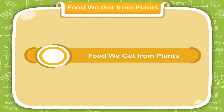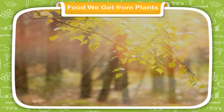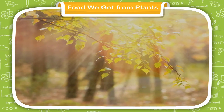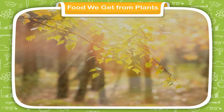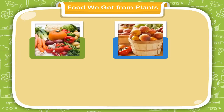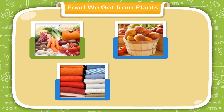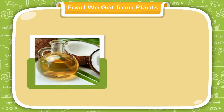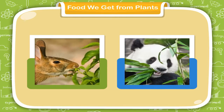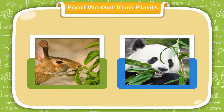Food we get from plants. Plants are very useful to us. They give us shade and fresh air to breathe. They also give us vegetables and fruits to eat, clothes to wear, and medicines, oil, wood, etc. Animals also depend on plants for their food.